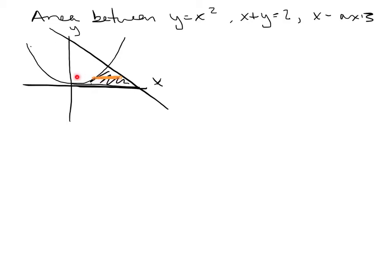When we take horizontal slices, we're adding up slices along the y-axis, so the integral must be dy and everything must be in terms of y. When doing vertical slices it was top minus bottom; now with horizontal slices we do right minus left — the rightmost function is the biggest and the leftmost is the smallest.